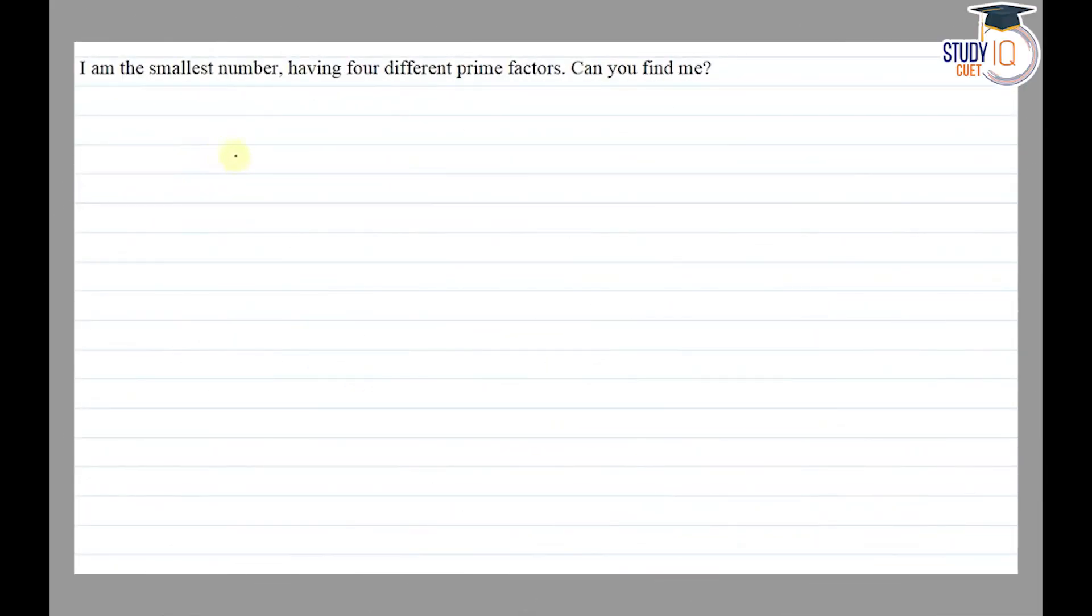Hello everyone, this question appears in class 6th NCERT chapter on playing with numbers. This is question 12 of exercise 3.5. The question says that I am the smallest number having four different prime factors. Can you find me?